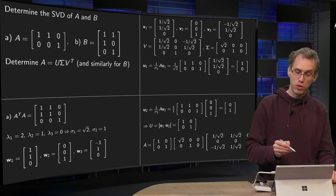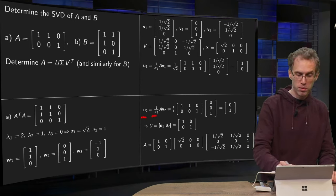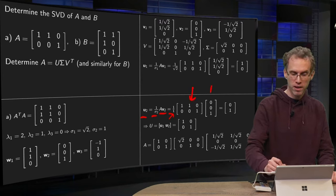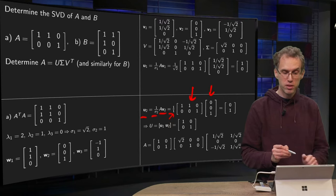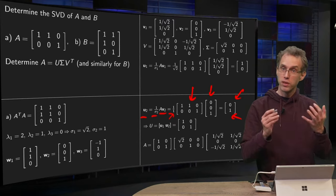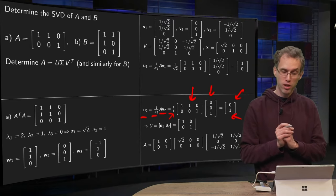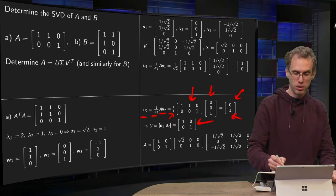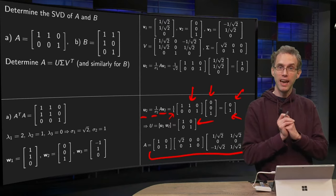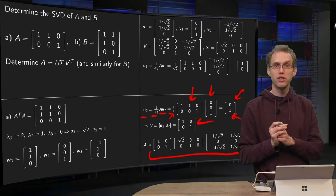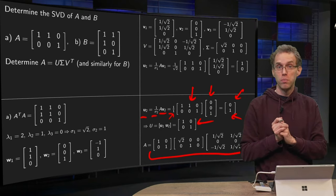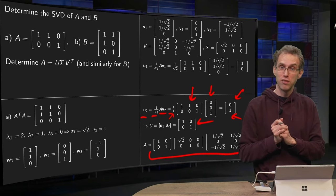Similarly you can compute U2. You have 1 over sigma2 times A times V2. Sigma2 equals 1, so you get 1 over 1, here you have your A, and here you have your V2. So the first inner product is 0, second inner product is 1, divided by 1, so you get just (0, 1). So there you have your matrix U, and there you have your singular value decomposition for the matrix A. So as you see, not too difficult, very similar to the computation of a diagonalization of a matrix.